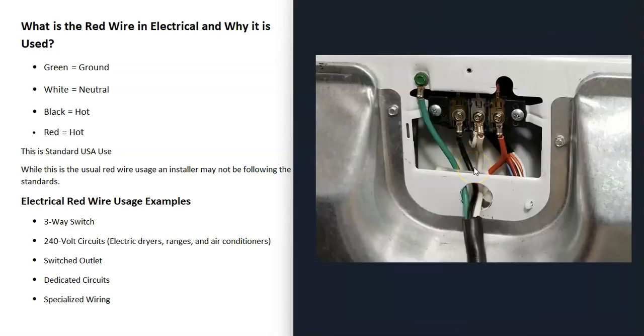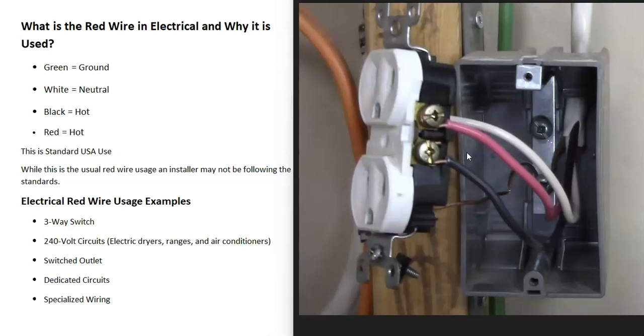Here's an example of a clothes dryer. Basically, you're going to have a ground, a neutral, and then both the black wire and the red wire are going to be hot.